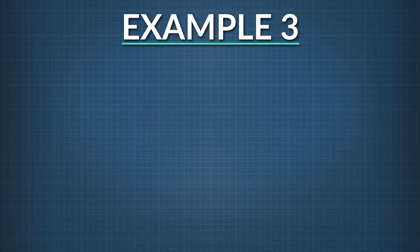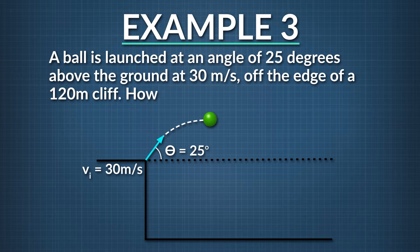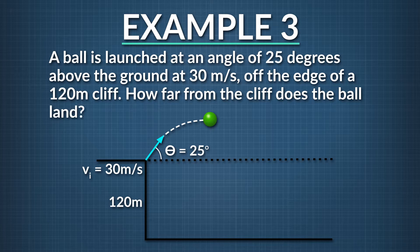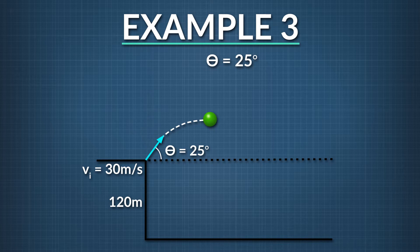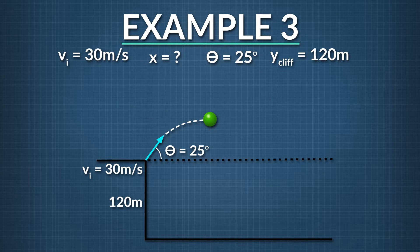You try this final projectile problem and see if you can solve for the range the ball travels. A ball is launched at an angle of 25 degrees above the ground at 30 meters per second off the edge of a 120-meter cliff. How far from the cliff does the ball land? To begin, let's write down the information given and what we're solving for. The ball's initial direction is 25 degrees above horizontal, its initial speed is 30 meters per second, and the cliff's height, y sub cliff, is 120 meters. We're solving for the overall range x. To know how far the ball travels, we need to first figure out how long the ball is in the air.